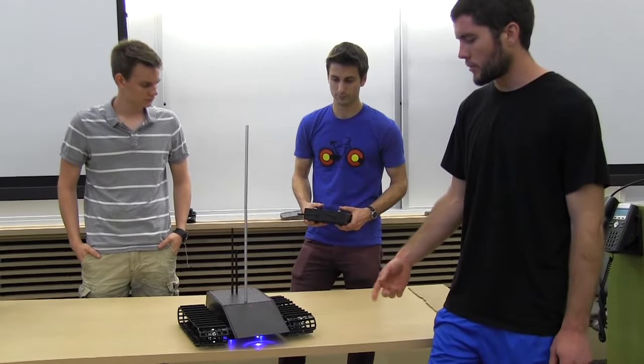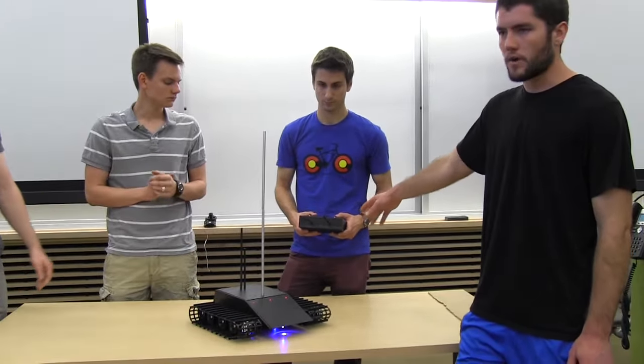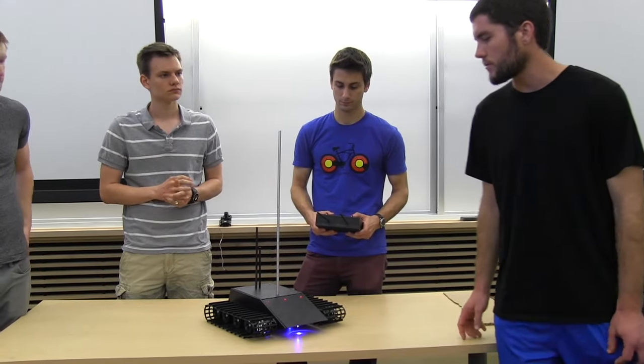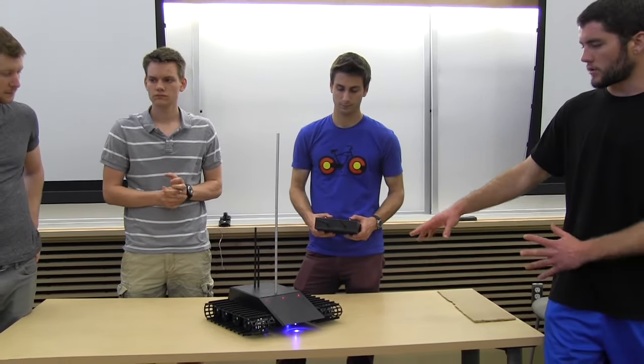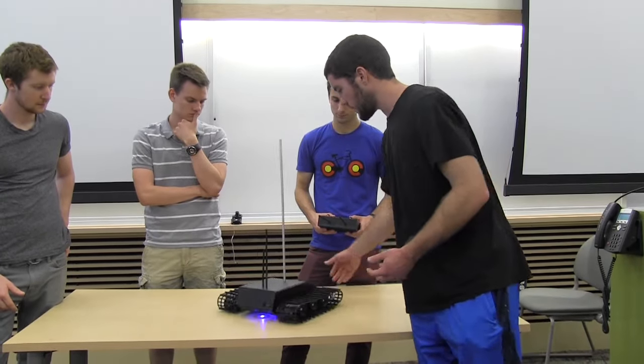Basically we run a closed loop proportional integral derivative feedback system where the user sends raw RPM values, and the closed loop feedback system allows the motors to keep the desired RPM no matter what friction is encountered.